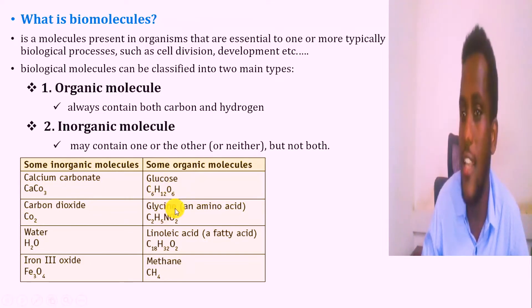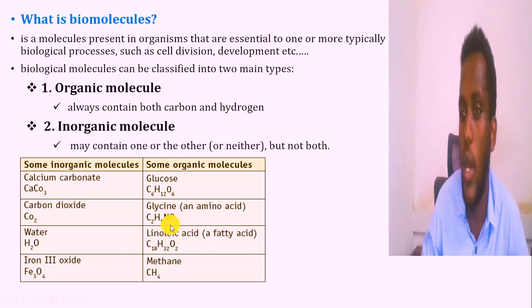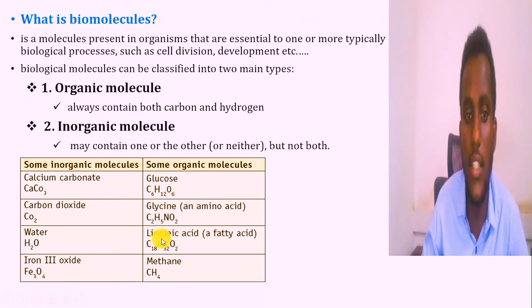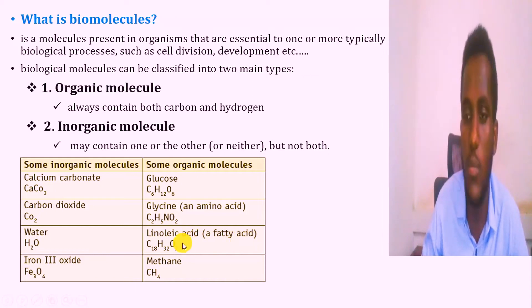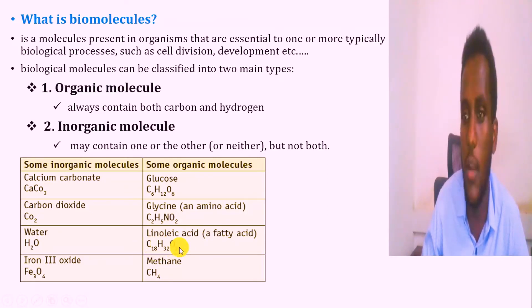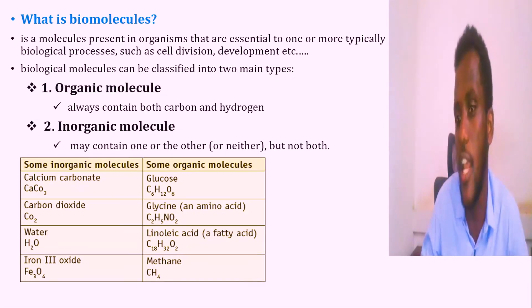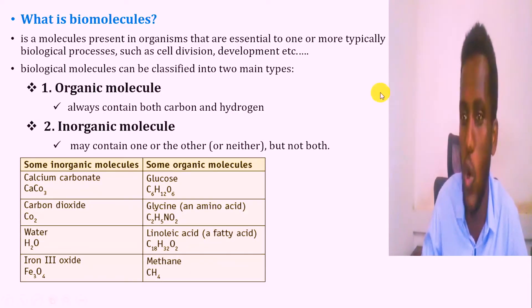Glycine, an amino acid with the chemical formula C2H5NO2, contains both carbon and hydrogen — making it an organic molecule.